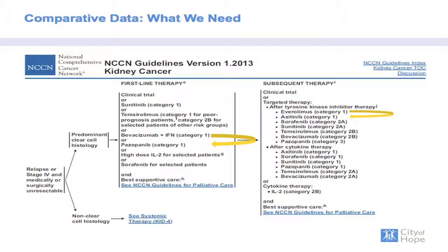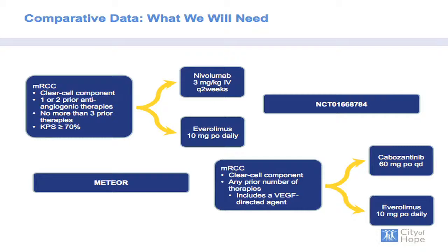We do have the 404 study comparing sorafenib and temsirolimus, but those are distinct agents. What we will need down the line is data emerging from ongoing clinical trials. Dr. Gore presented the randomized trial comparing everolimus and nivolumab; Dr. Choueiri presented the Meteor trial comparing everolimus and cabozantinib. Just as important as comparing efficacy, we really need to take a hard look at toxicity across these trials.